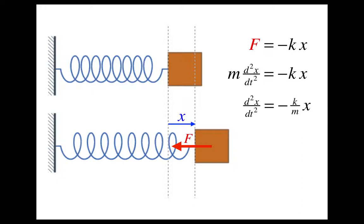This, you will remember from the previous video, is the condition for simple harmonic motion. When we see an equation of the form d squared x by dt squared equals negative omega squared x, we know that we have simple harmonic motion. In this case, omega squared is equal to k over m.